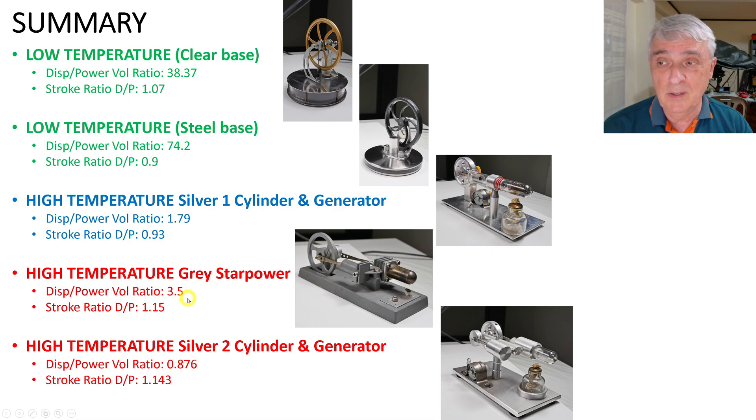The high-temperature grey star power, this one, the displacer power volume ratio is 3.5, very much different than all the others, very different from the other higher-temperature ones, much more in line with the low temperature. So I found that kind of interesting. It's off by a factor of 10 from these, but it's also off by at least two times this and almost four times this one. So 3.5 and the stroke ratio 1.15. And the last one, the high-temperature silver two-cylinder, the displacement power volume ratio is 0.876, and the stroke ratio 1.143. So even these two are vastly different.